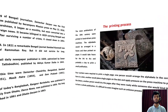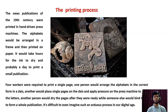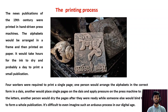Now let's know a little about the printing process. News publications of the 19th century were printed in hand-driven press machines. The alphabets would be arranged in a frame and then printed on paper. It would take hours for the ink to dry and probably a day to print a small publication. Four workers were required to print a single page: one person would arrange the alphabets correctly on a dais, another would place single pages on the dais and apply pressure to print the letters, another would dry the pages after they were ready, while someone else would bind them to form a whole publication. I have attached a picture of a printing block here — it's difficult to even imagine such an artisan process in our digital age.